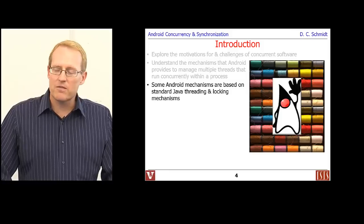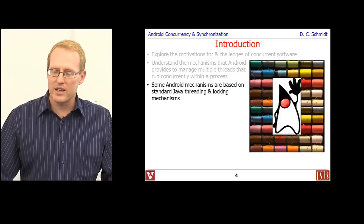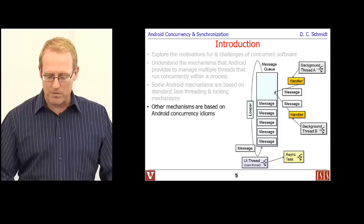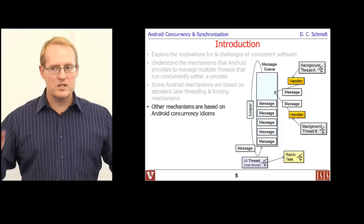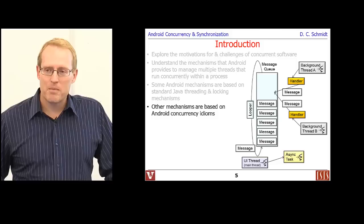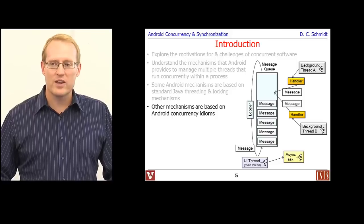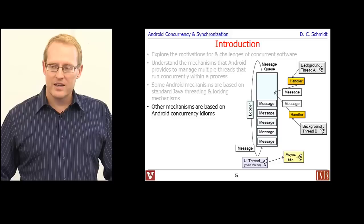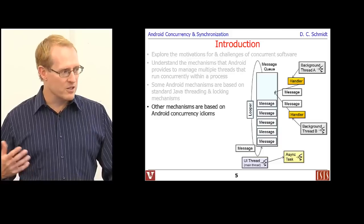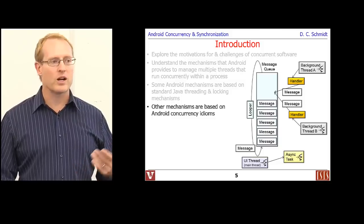Some of the mechanisms for concurrency that Android provides are based on standard Java — the standard threading and synchronization mechanisms you'd find on a desktop or server. Android supports the bulk of those. There are also mechanisms specific to Android, particularly around the user interface thread, where certain operations cannot be called outside that thread's context.